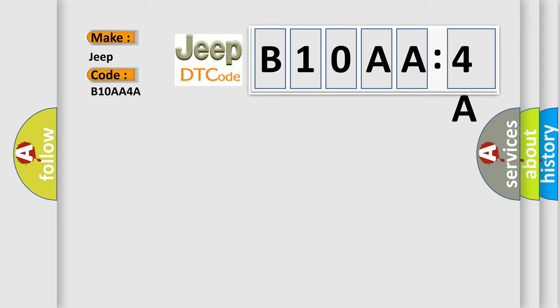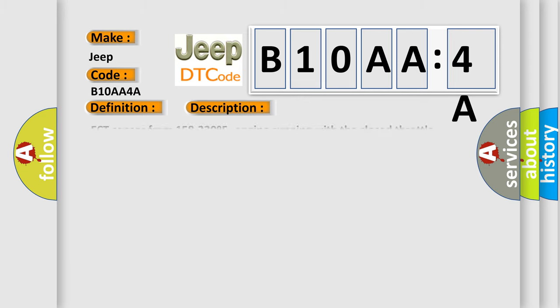The basic definition is Idle speed too low. ECT sensor from 158 to 230F, engine running with the closed throttle position switch indicating the throttle is closed, and the PCM detected the actual idle speed at least 100 revolutions per minute less than the desired idle speed during the IAC diagnostic test.